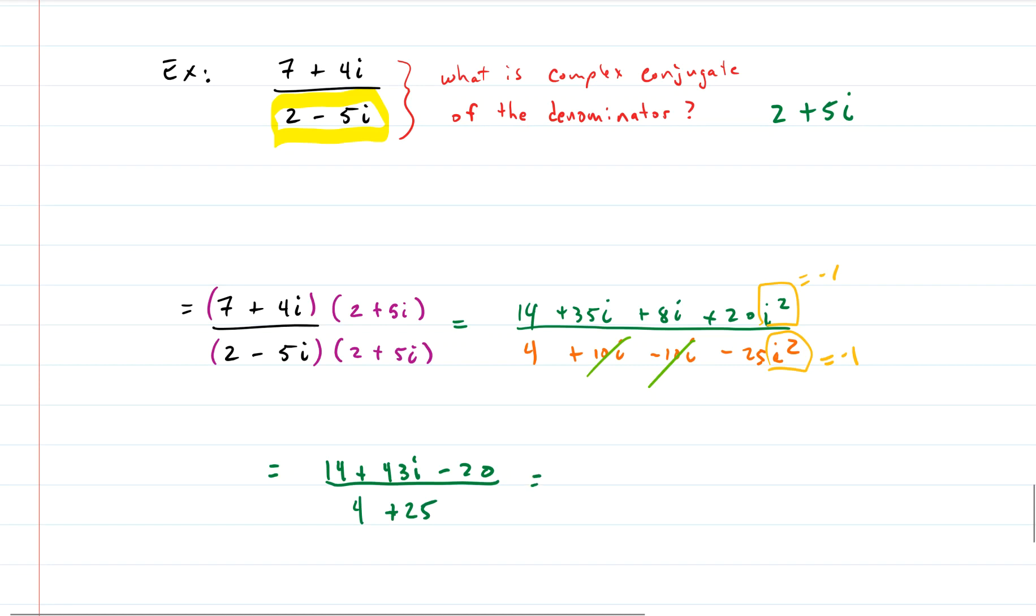And in the bottom we have 4. The negative 25 times negative 1 gives us positive 25. The 14 and the negative 20 gives us negative 6.